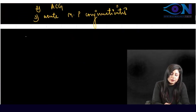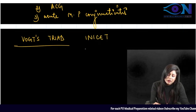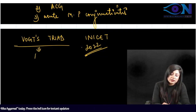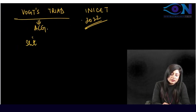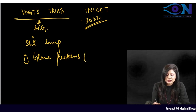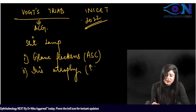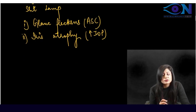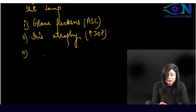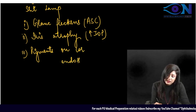Vogt's triad is found in acute congestive glaucoma and is seen on slit lamp. It consists of: (1) glaucomflecken — anterior subcapsular cataract; (2) patches of iris atrophy due to very high intraocular pressure; and (3) pigments on the corneal endothelium. This was asked in an INICET question in early 2022.